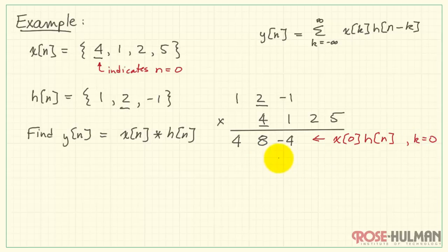Alright, let's move on to the next value. This is where we are scaling the impulse response by x of 1. I would have 1, 2, and minus 1. And this is x of 1 times the delayed version of h, h of n minus 1. Notice the stagger of the two rows here. And again, that's representing the shift operation.